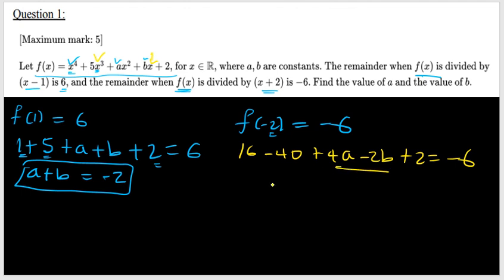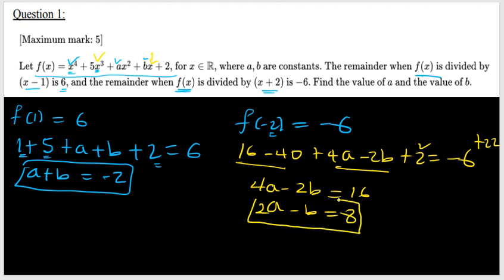So these are the constants. 4a minus 2b, which is equal to, I have to take everything to the right side. This is negative 24. Negative 24 plus 2 will be negative 22. When I shift to the right, it will be plus 22 here. So negative 6 plus 22 will be 16. So divide all of them by 2. So 2a minus b is equal to 8. This is my second equation.